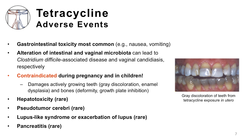The tetracyclines are associated with a number of important adverse events. Gastrointestinal toxicity is the most common, including nausea, vomiting, diarrhea, and other types of GI intolerance. Alteration of the intestinal and vaginal microbiota can occur, leading to overgrowth of certain pathogenic bacteria as well as fungal pathogens, as is the case with Clostridium difficile-associated disease such as colitis, and vaginal candidiasis.